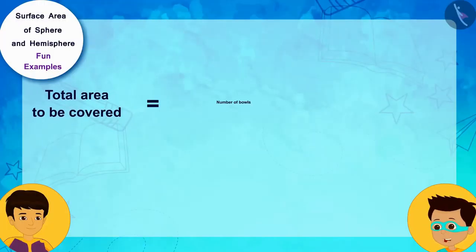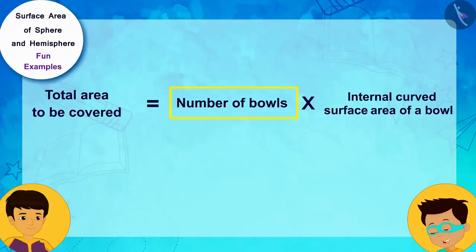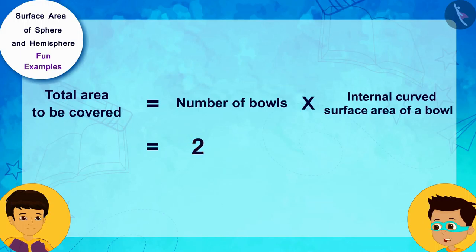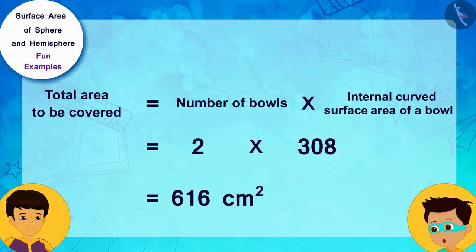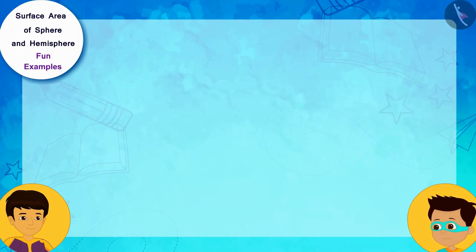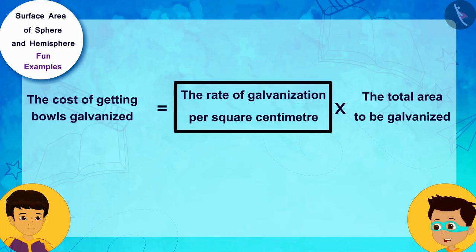That's right! And you have two such bowls. This means you have to get a total area of 2 times 308, that is 616 square centimeters. Now, we just need to multiply the galvanization rate per square centimeter, 5 rupees,